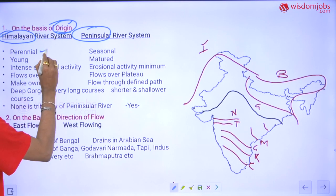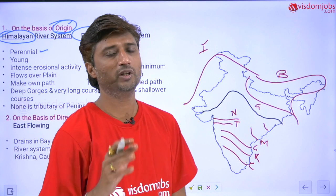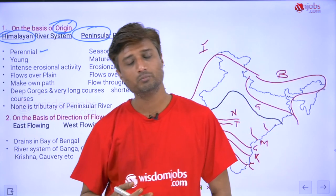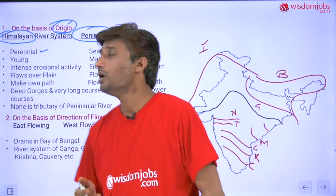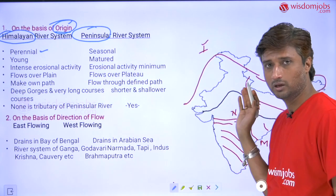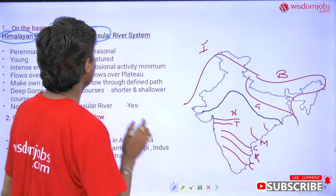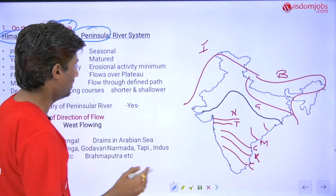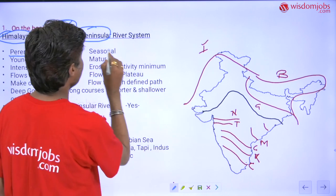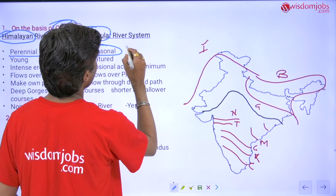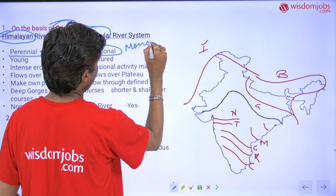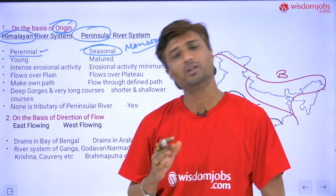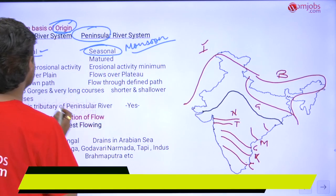The first difference is that Himalayan rivers are perennial — they receive water throughout the year. During the rainy season they get water from rain, and during summer they get water due to melting of ice over the Himalayas, so they flow all year. Peninsular river systems are seasonal; their flow depends only on the monsoon. Whenever there is monsoon they have water, and in summer they dry up or the water level reduces.